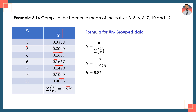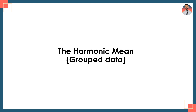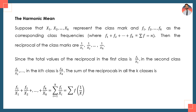Now I will explain the harmonic mean for grouped data. Suppose x1, x2, ..., xk represent the class marks for a frequency distribution. If you have grouped data, x1, x2, ... are the class marks or midpoints of each class, and f1, f2, ..., fk are the corresponding frequencies, where f1 + f2 + ... + fk = summation of f = n.